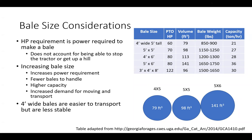As you increase bale size, power requirements go up, but you have fewer bales to handle. A 4x5 bale produces about 80 cubic feet, while a 5x6 almost doubles that. With bigger bales you have more hay per bale, higher baling capacity, and increased tons per hour. However, bigger bales also come with increased challenges when moving and transporting them — they're more effective when putting out to cows but more challenging to haul down the road on a wagon.